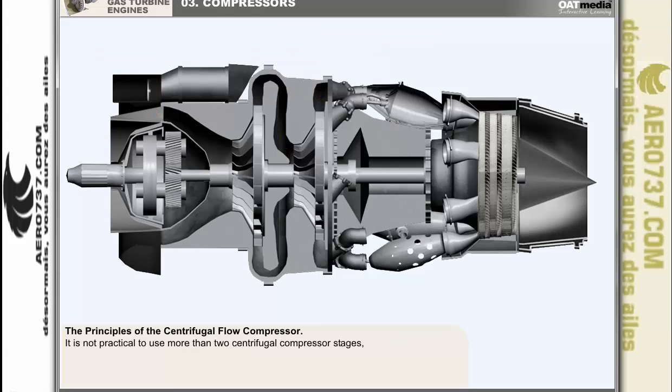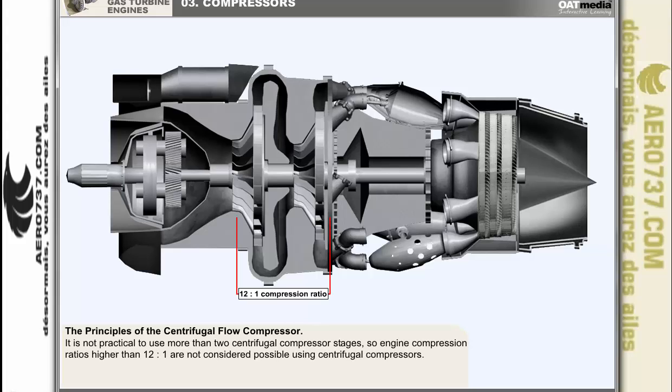In practice, it's not been found feasible to use more than two centrifugal compressor stages together. Excessive impeller tip speeds and extreme centrifugal loading prohibit efficient operation of a third stage. As a result, engine compression ratios of much greater than 12 to 1 are not considered possible using centrifugal compressors.